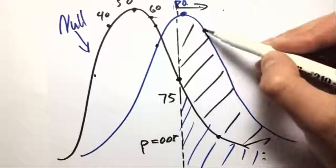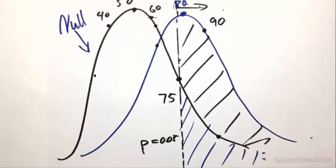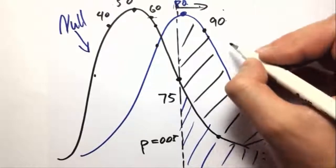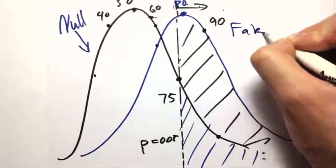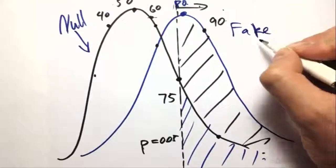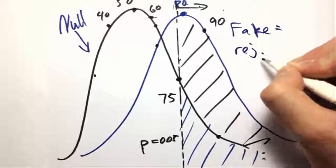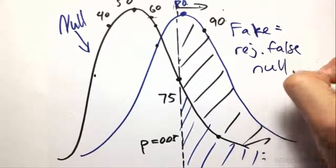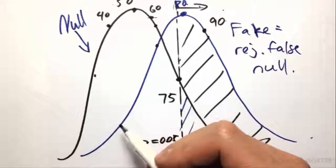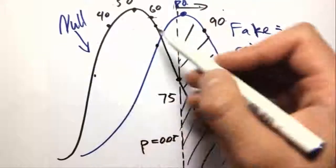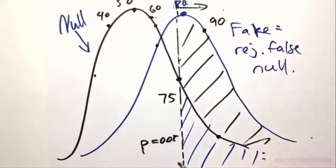So if we get 90, like we got here, we said that it was a fake coin. In other words, we rejected the false null. Fake equals rejecting false null. And true would be, if it was a normal coin, it would be the true null.